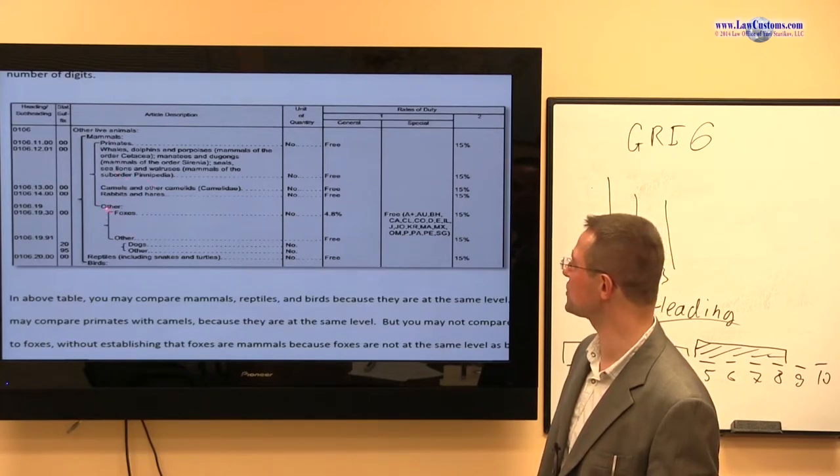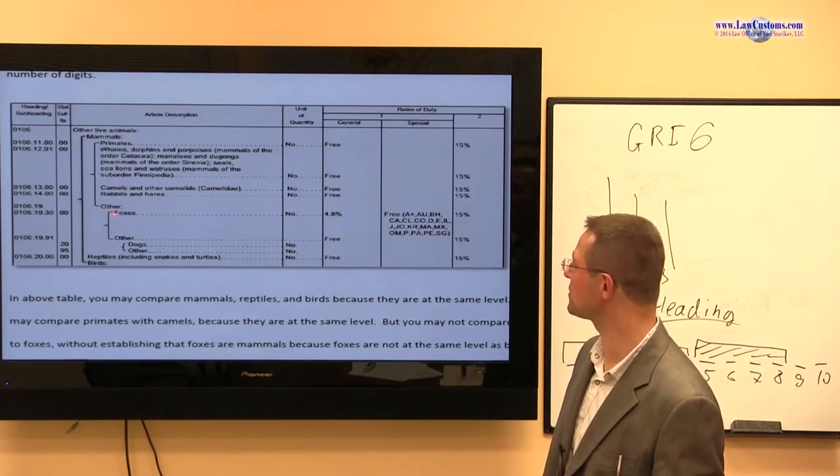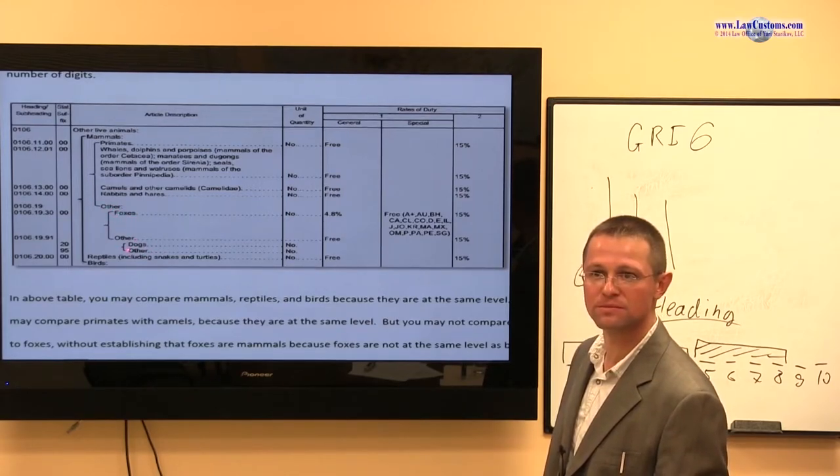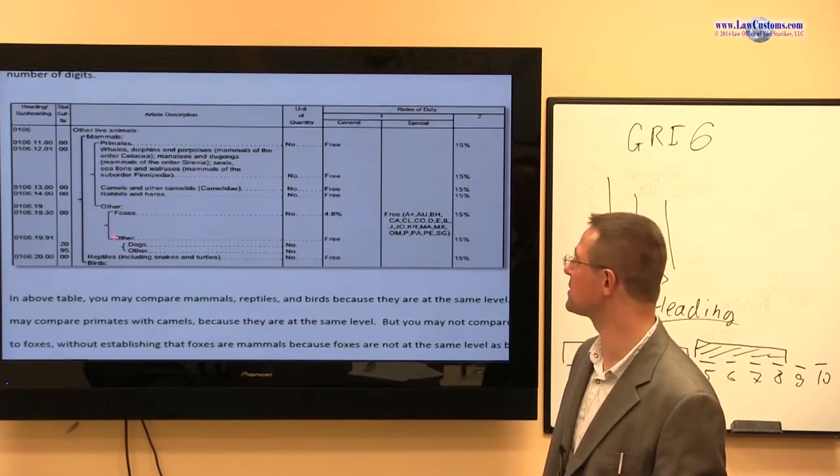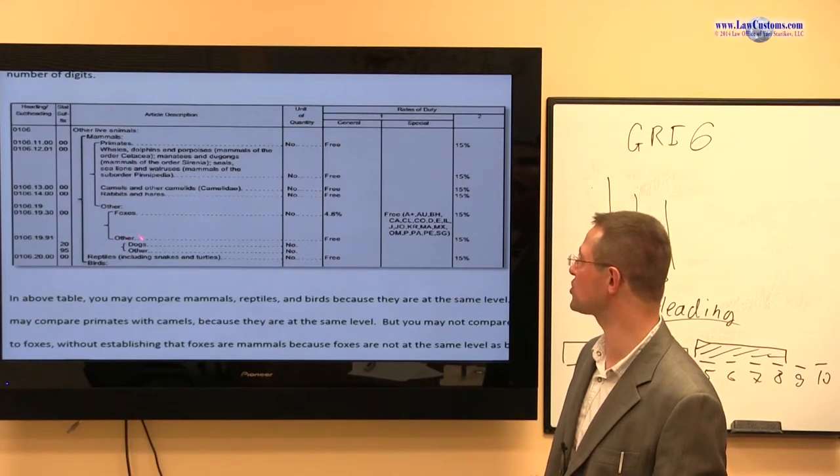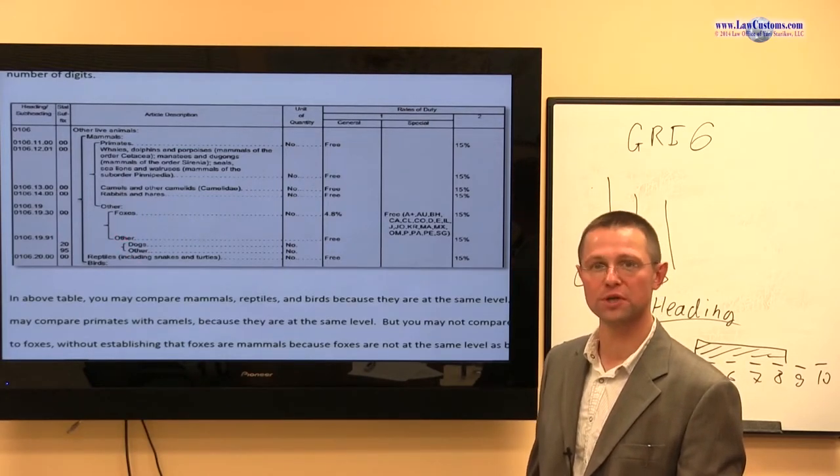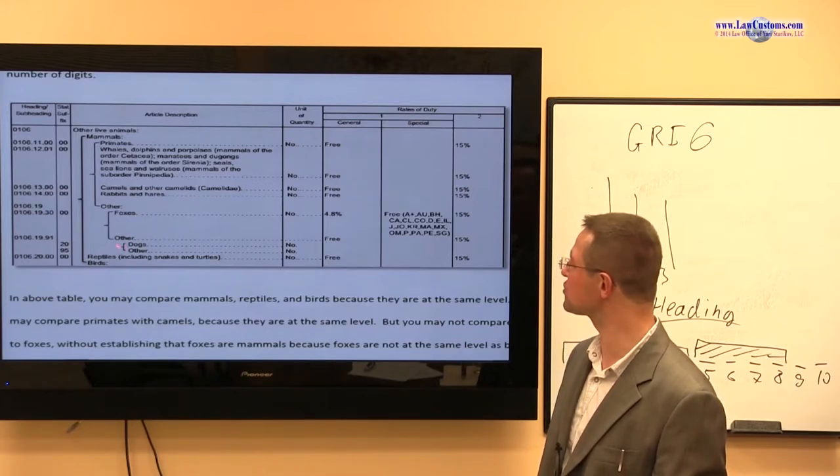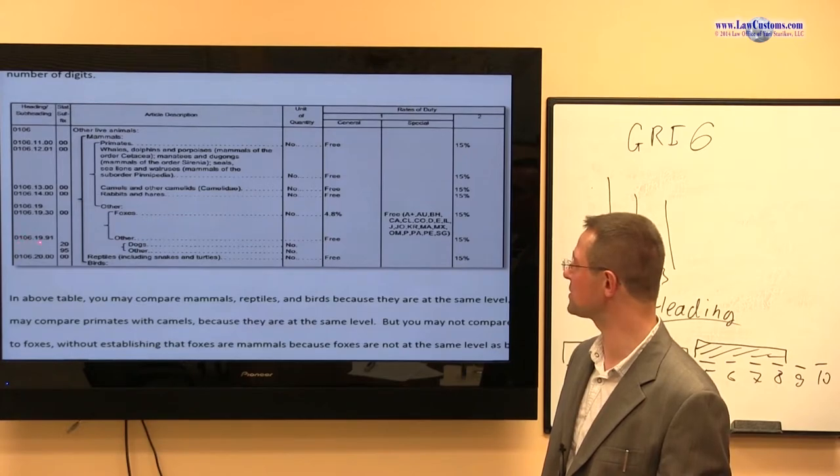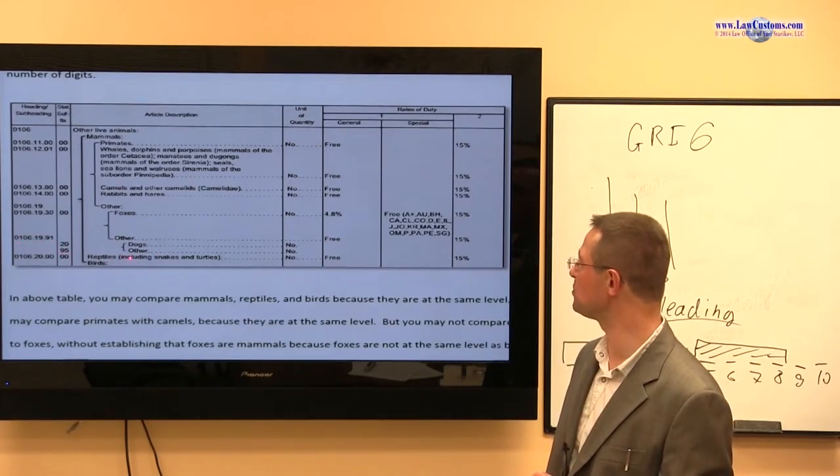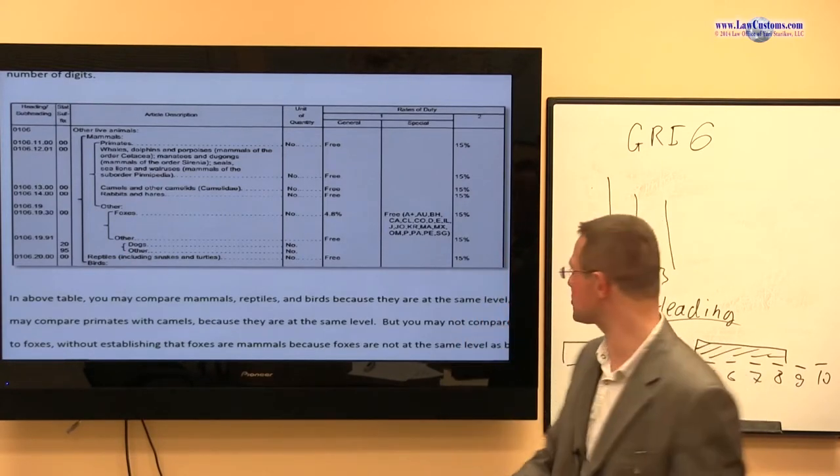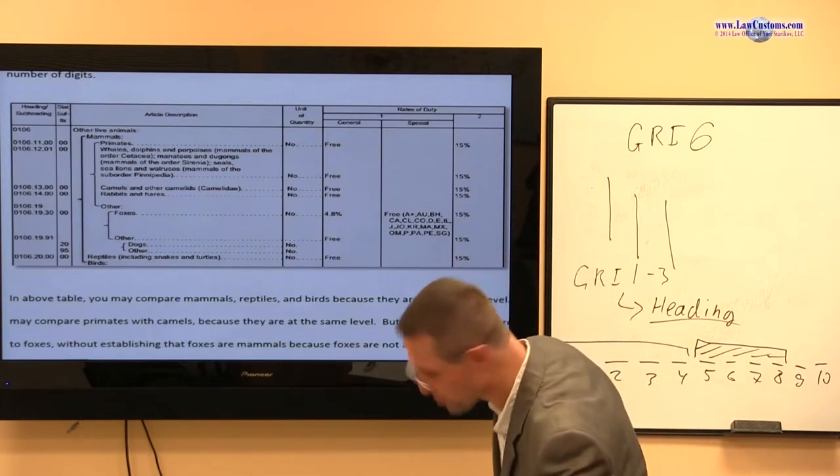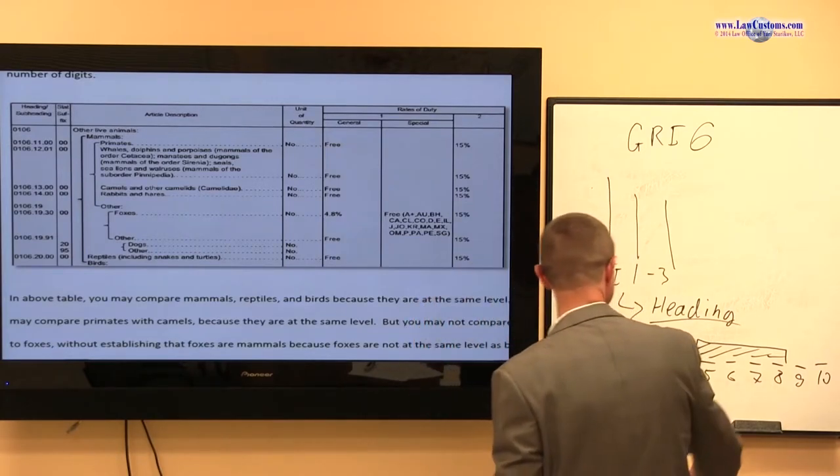Then our next question is, is it a fox or is it not a fox? So you say, let's say it's not a fox. Then our next question would be, is it a dog or is it not a dog? And if it's not a dog, then 0106199195 would be your classification choice. So really, it's kind of like a check system where you have to go through step-by-step analysis.